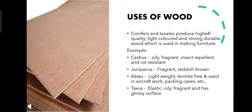Uses of gymnosperm wood. The conifers and Taxales produce higher quality, light-colored, and strong durable wood which is widely used in making furniture and other household products. Example: Cedrus — it is durable, oily, fragrant, insect repellent, and rot resistant. Juniperus has a fragrant and reddish-brown wood.